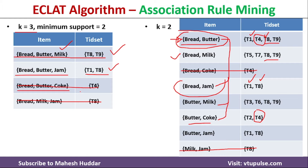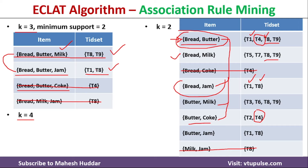Now we continue with K equal to 4. We combine the two frequent 3-itemsets — {bread, butter, milk} and {bread, butter, jam} — to get the 4-itemset {bread, butter, milk, jam}. Taking the intersection, we get only T8. This 4-itemset has only one transaction and does not satisfy the minimum support, so it is not a frequent itemset. We cannot continue to K equal to 5 as we only have five items total, so we stop here.